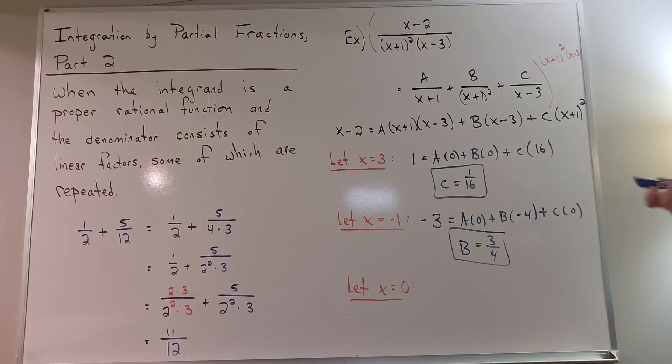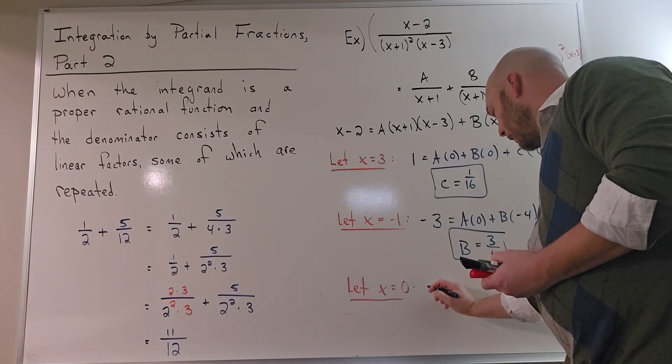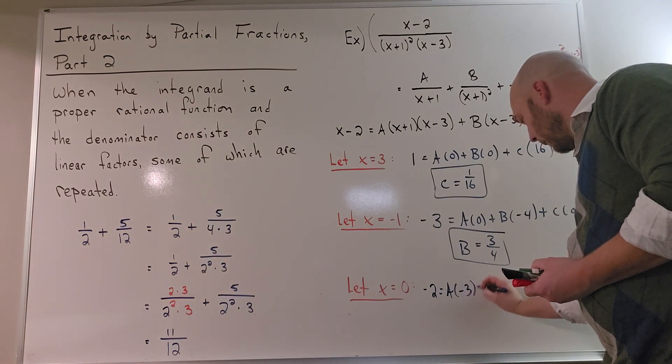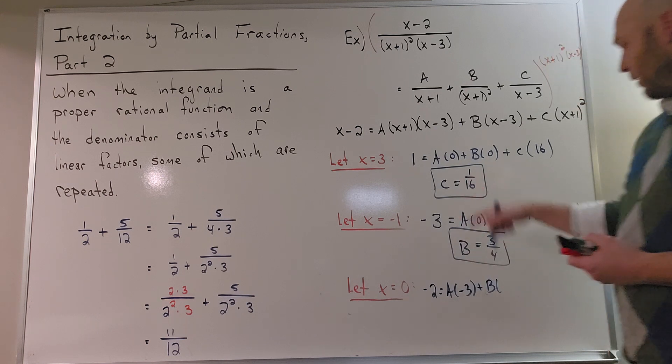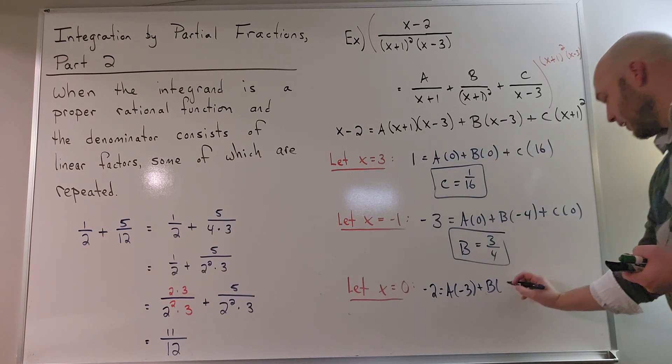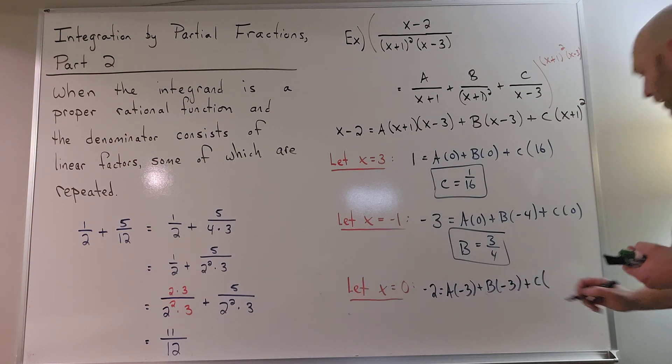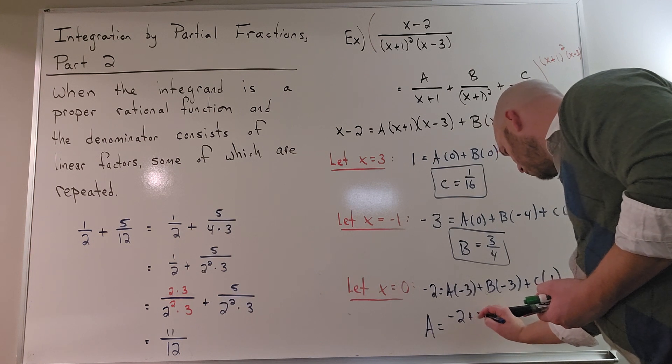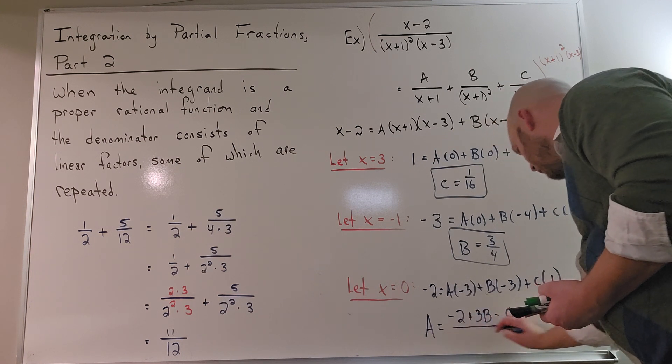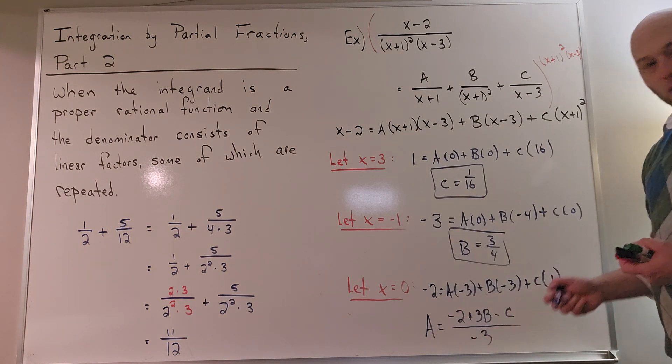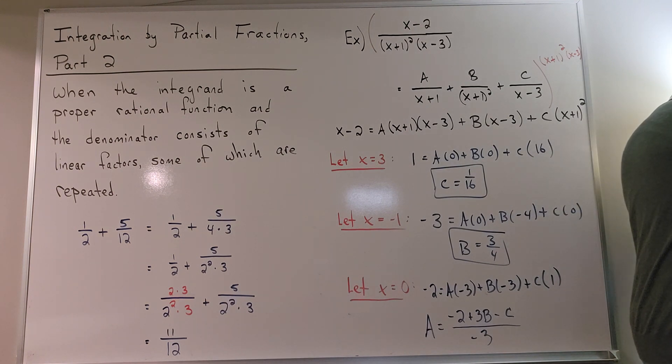All right. Plugging in x equal to zero, we get the following: 0 minus 2 would be negative 2 equal to a times 1 times negative 3, would be negative 3, plus b. Again, I know b and c, but I'm going to leave those as written here as b and c until the very end, just to kind of keep it a little bit cleaner. b and then 0 minus 3, so that would be negative 3, plus c times 0 plus 1, which is 1. 1 squared is 1. And then I get a would be negative 2 plus 3b minus c divided by negative 3. So again, add this to the other side, subtract this, divide that by negative 3. And then I've got some fractional work to do, which I don't have a calculator with me, so I'll just run through that on the board.